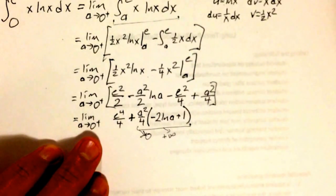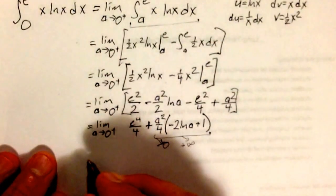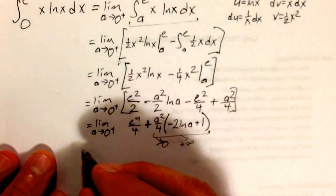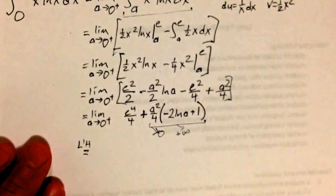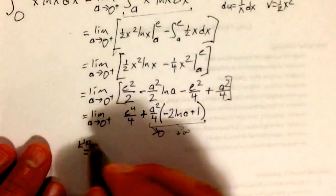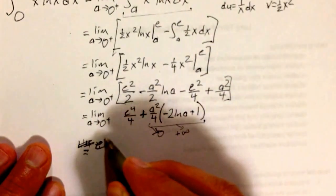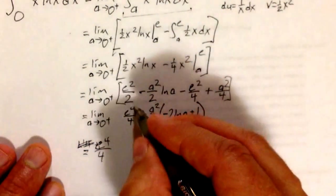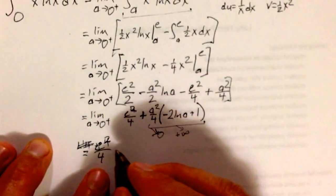Well, the answer is we're going to apply L'Hôpital's, because it's an indeterminate form. Let me actually set it up. I'll bring out the e squared over 4. And then I've got,